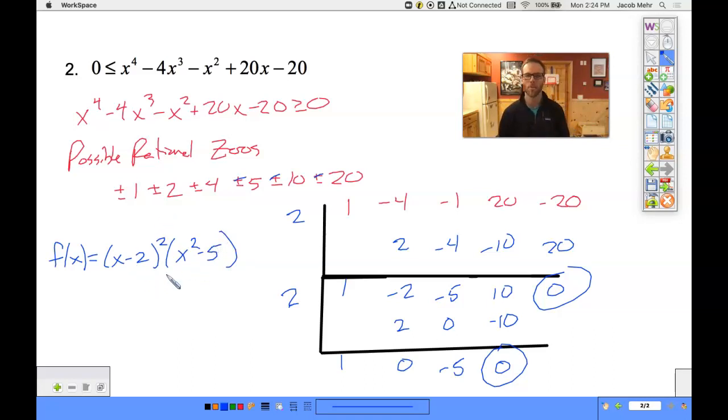So what are our last two zeros? Where does x squared minus 5 equal 0? That would be x equals plus or minus the square root of 5.